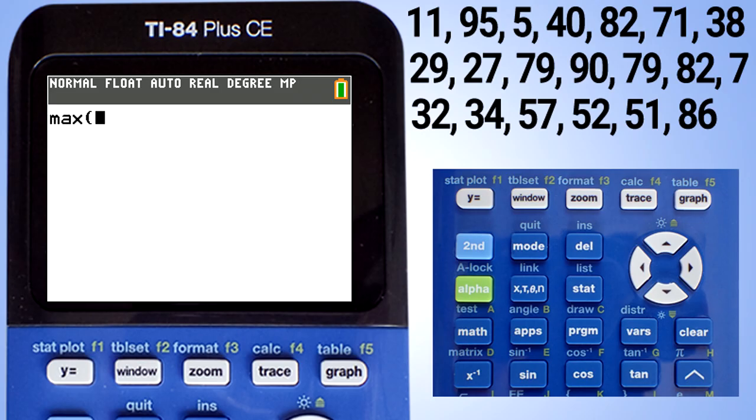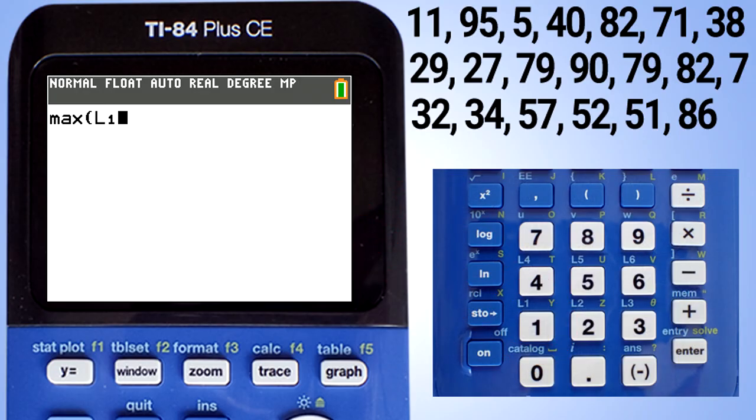Move down to the max and press enter. This screen appears. We're going to enter L1 here by pressing the second button and the L1 button. Close the parentheses and press the enter button. 95 is the largest number in our data set.